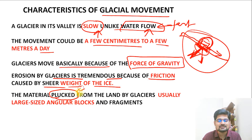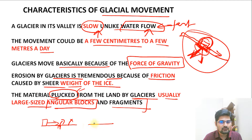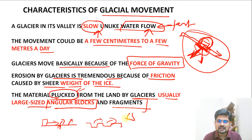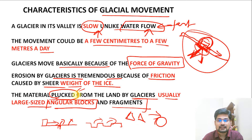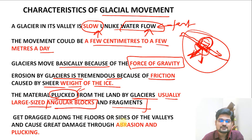The material is removed through the process of plucking. From the land surface, usually large-sized, angular blocks and fragments are taken away. In glacial movement, angular blocks and angular fragments of rock boulders are characteristic — unlike the round boulders seen in fluvial processes. If you go to a glaciated area, you'll find angular pieces or fragments of rock. The two important processes shaping erosional features are abrasion and plucking.